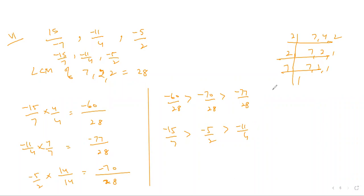So that was all about Question Number 8 of Exercise 4.1, chapter Rational Numbers of Class 7 — the question was to arrange the rational numbers in descending order. If any type of doubt is there, feel free to ask by commenting in the comment box. If you guys like my videos or if it is somewhere helpful to you, subscribe to my channel, hit the like button, and share the videos as much as possible. In my next video I will be solving the rest of the questions of the same exercise. Thank you so much.